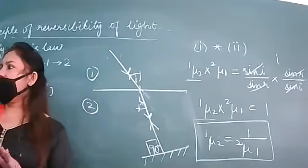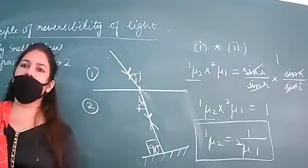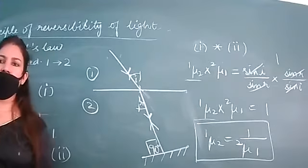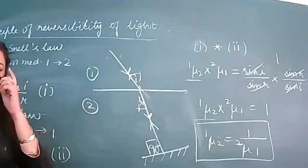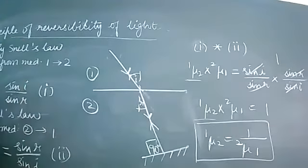We arrive at a very interesting result: if the refractive index of medium two with respect to one is given, the refractive index of medium one with respect to two is simply its reciprocal. We just invert it. This result comes from the principle of reversibility — 'reversibility se yaad rakho ki reverse ho jayega.' So refractive index reverse ho jayega.